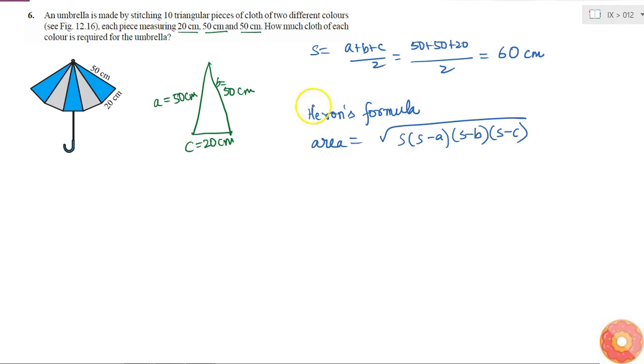So if I put the values of A, B, C and S, then I will get it as square root over 60 into 60-50 into 60-50 into 60-20.